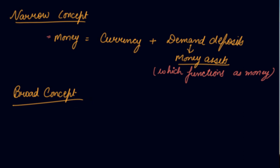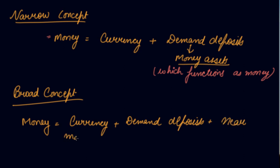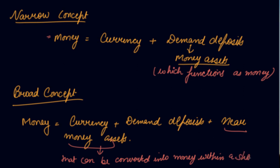Now in the broad concept we have money is equal to your currency plus demand deposits plus your near money assets. Your near money assets are the assets which can be converted into money within a short notice. So these are the two concepts of money: narrow concept and the broad concept.